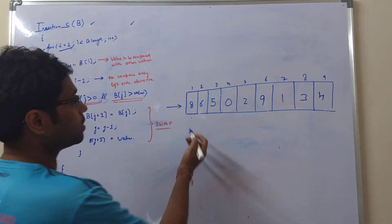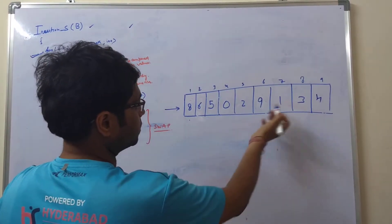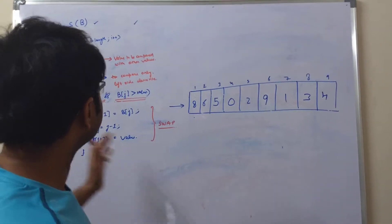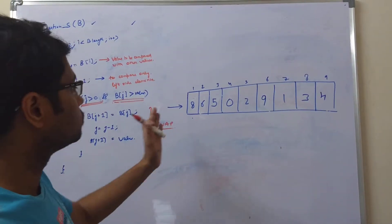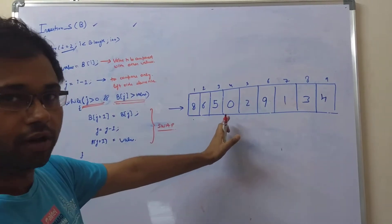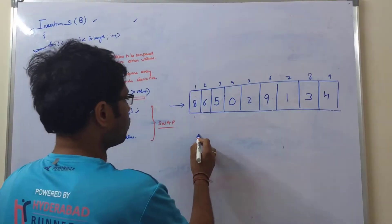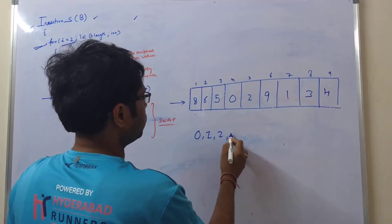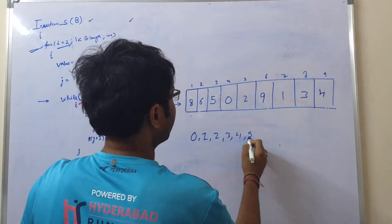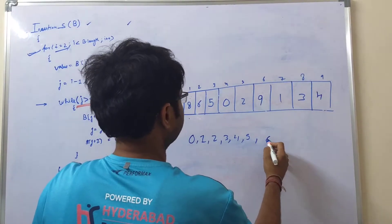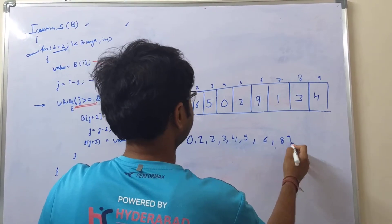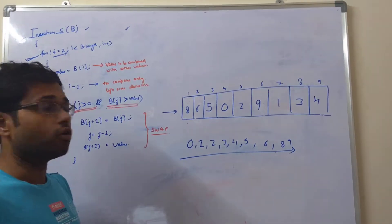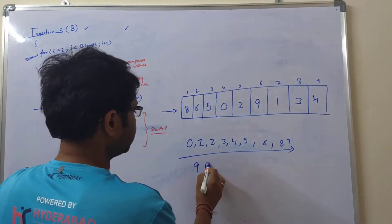So if you have some random numbers in an array, with the help of sorting algorithms you can sort this given input in increasing order — something like 0, 1, 2, 3, 4, 5, 6, 8, and 9.